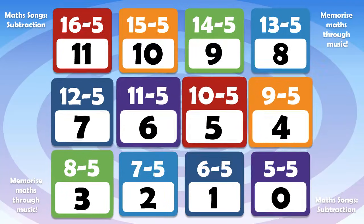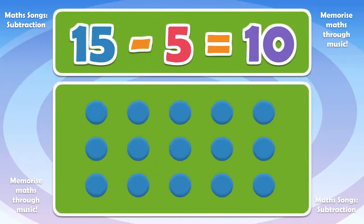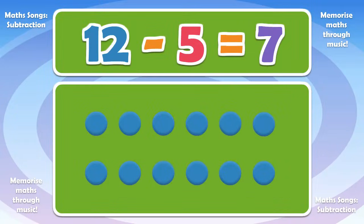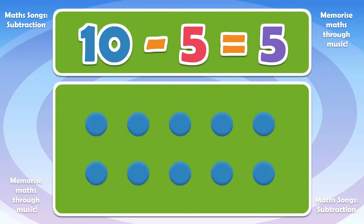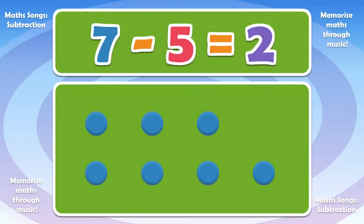Let's try it again. Watch the dots. 15 minus 5 is 10. 12 minus 5 is 7. 10 minus 5 is 5. 9 minus 5 is 4. 7 minus 5 is 2.